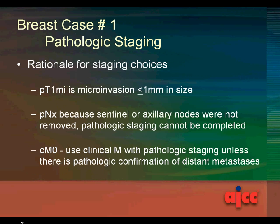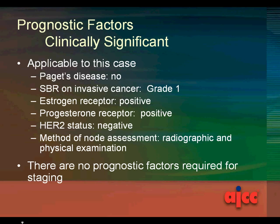The rationale for the staging choices: pT1mi is microinvasion less than or equal to 1 mm in size. pNX because sentinel or axillary nodes were not removed and pathologic staging cannot be completed. Clinical M0 is used because you use the clinical M with pathologic staging unless there is pathologic confirmation of distant metastasis. Clinically significant prognostic factors: Paget's disease — no; Scarff-Bloom-Richardson on invasive cancer — grade 1; estrogen receptor positive; progesterone receptor positive; HER2 status negative; method of node assessment is radiographic and physical exam. No prognostic factors are required for staging.